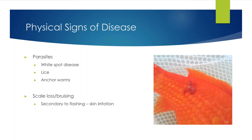Physical signs of disease also include parasites. There are macro parasites you can see with the naked eye, including white spot disease, lice, and anchor worms. With anchor worms, the wormy part you see sticking out is actually just the female reproductive organ — these replicate very quickly. Most commonly with parasites, you'll see scale loss and bruising, secondary to flashing. Since fish cannot scratch themselves like we can, they will bounce and scrape themselves off things in their environment — plants, rocks, or each other. The bruising is caused by that skin irritation, as shown in the picture on the right.